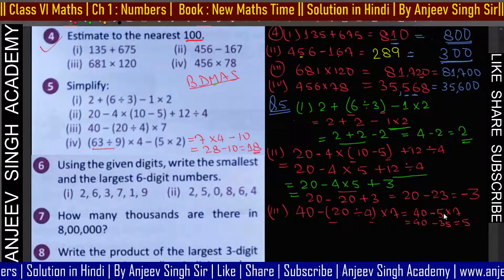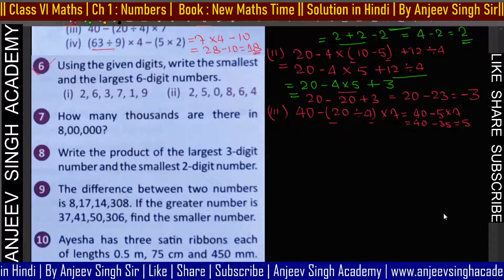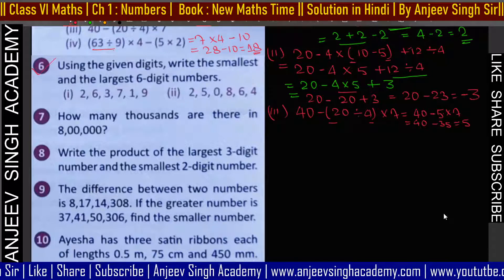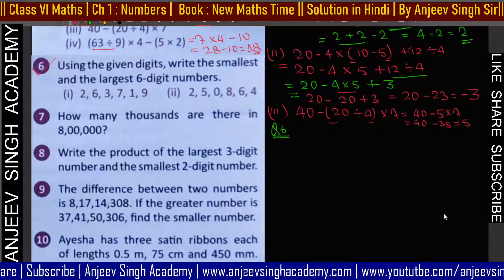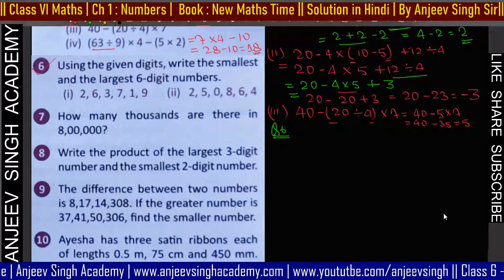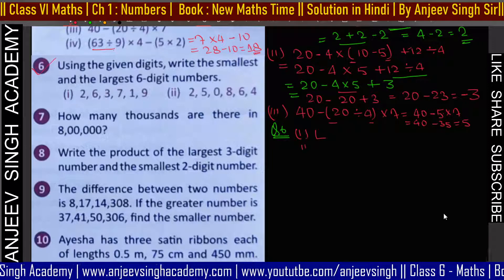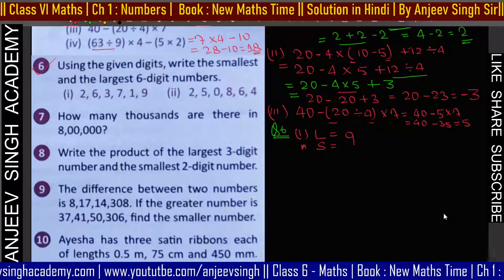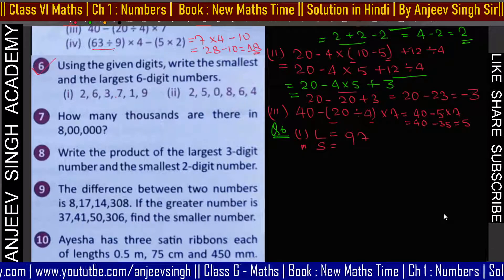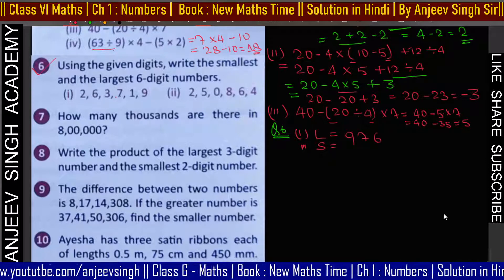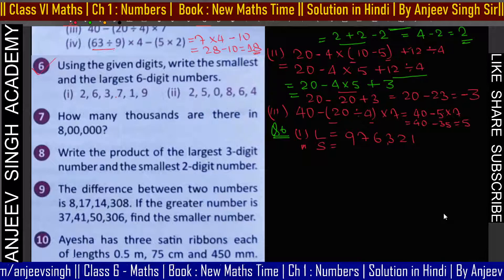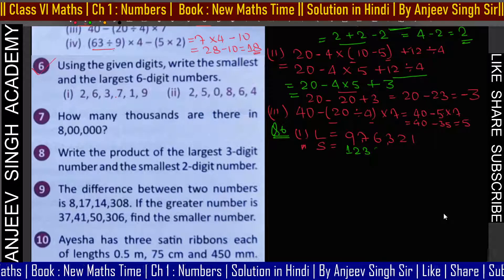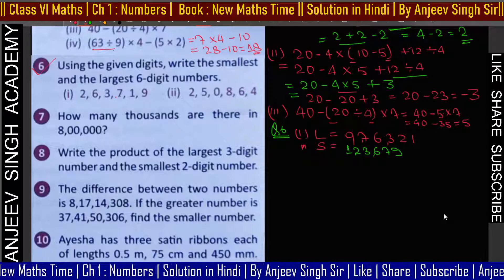Question number 6: given digits से smallest और largest number लिखना है। Largest के लिए बड़े value से start करो — descending order में लिखो: 9, 7, 6, 3, 2, 1। यह हमारा largest number बन गया। Smallest के लिए इसका reverse करो: 1, 2, 3, 6, 7, 9। इस तरह largest और smallest number लिख सकते हैं।